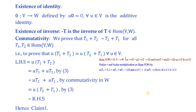For commutativity, we need to prove that for all T1, T2 in Hom(V,W), T1+T2 = T2+T1. Since we want two mappings to be equal, we prove their images are equal. Using equation 3 for pointwise addition and then commutativity in W, and applying equation 3 again, we get the right-hand side. This proves Claim 1.